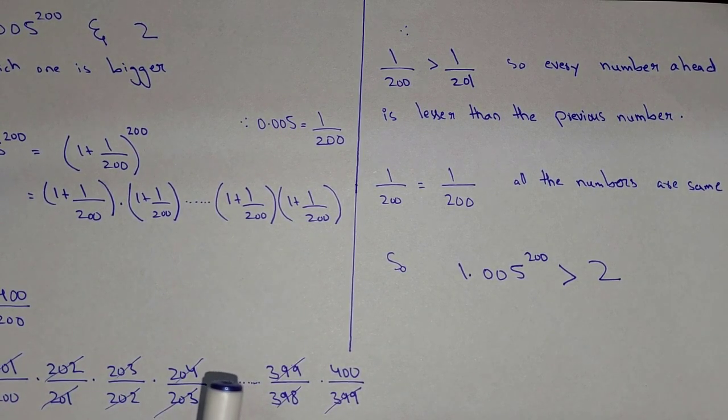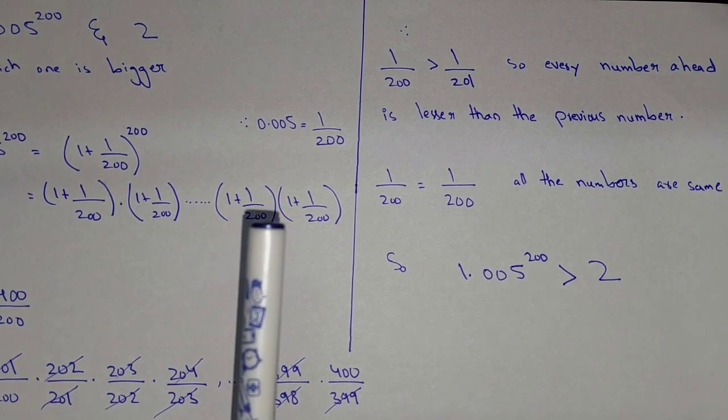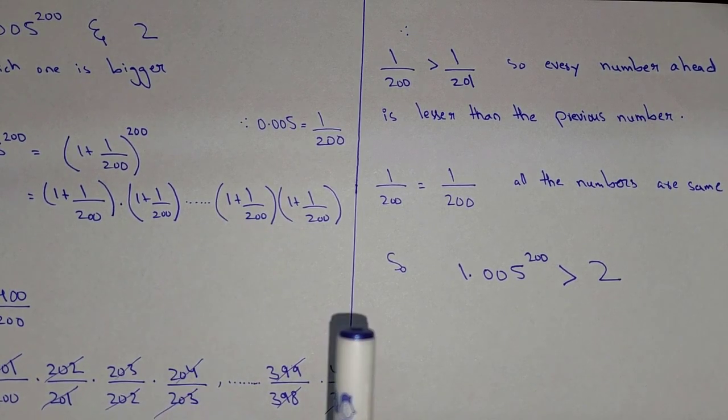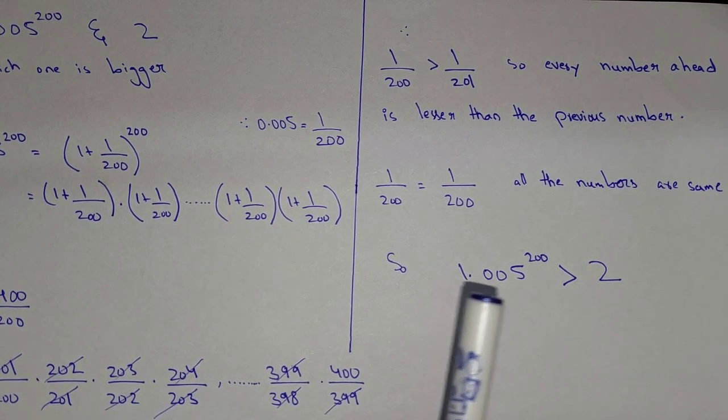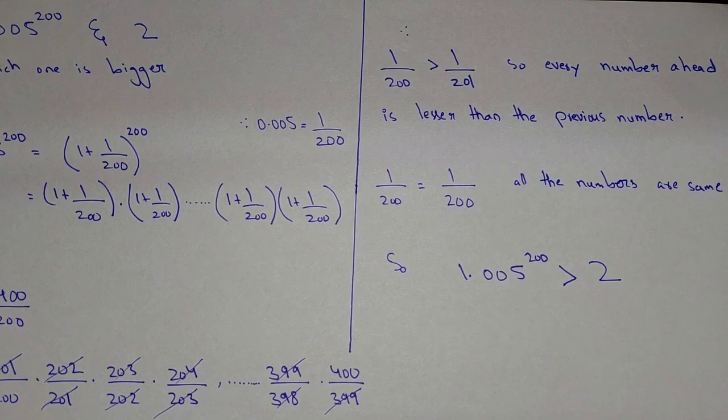So in this way we can conclude that this one is bigger than this one. It means we can say that 1.005 power 200 is greater than 2. I hope you understand. Thank you for watching this video.